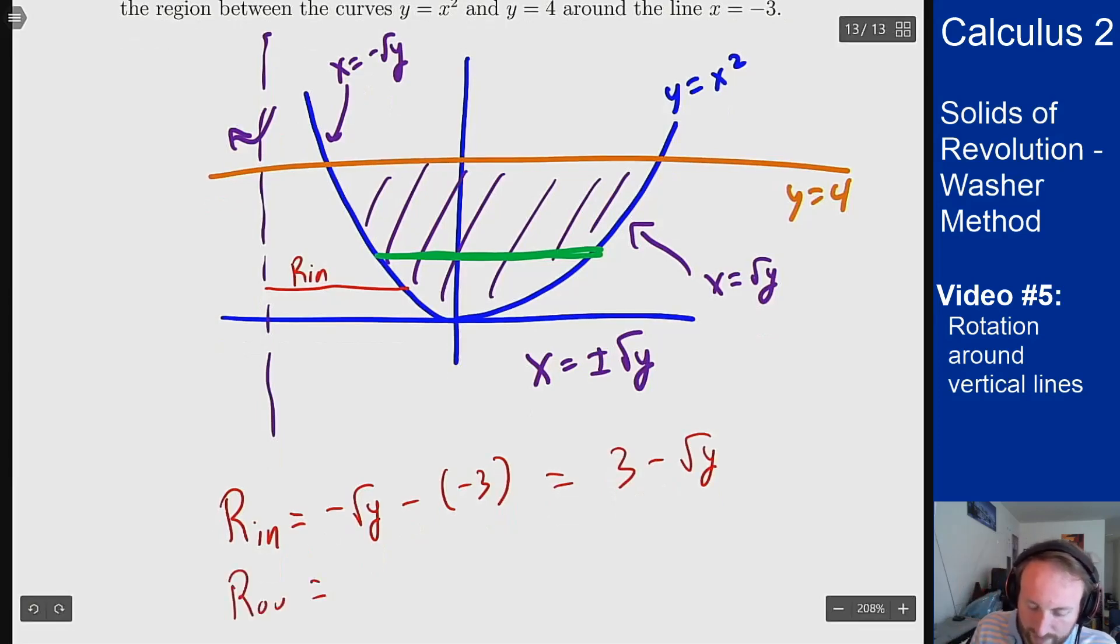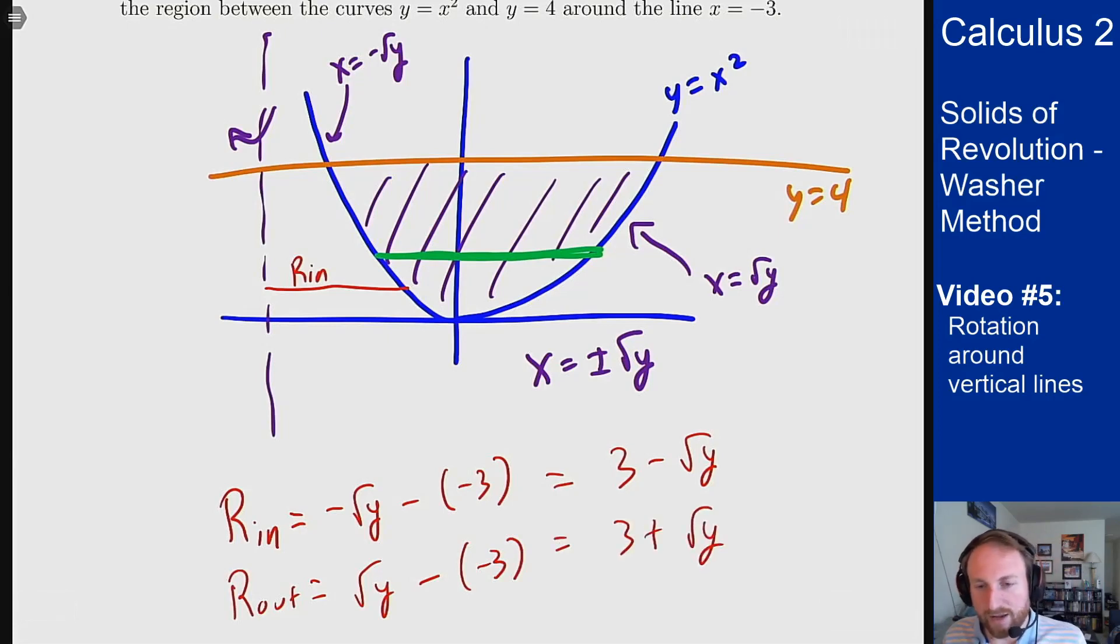What's my outer? Well the outer is then going to be square root of y minus negative 3, because that's the other branch of the function. It's going to be 3 plus square root of y. There's my inner and my outer.